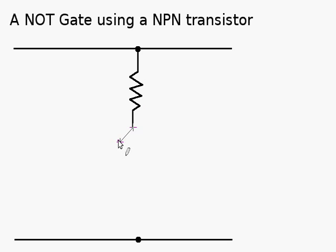Now I'm drawing the transistor. It being an NPN, I'll have to draw the arrow pointing outward.